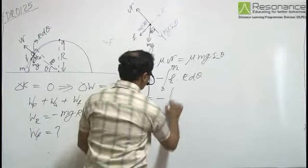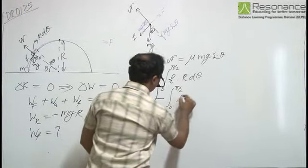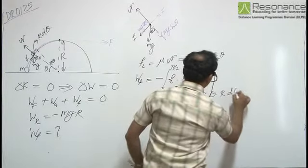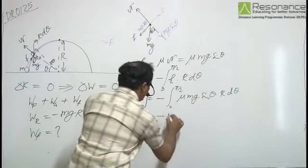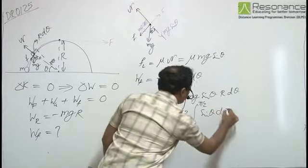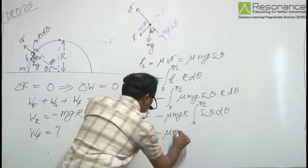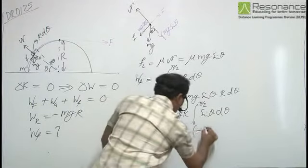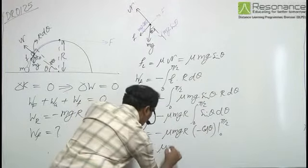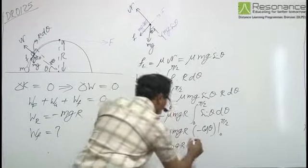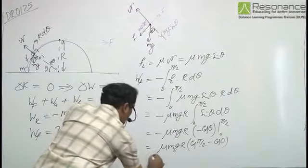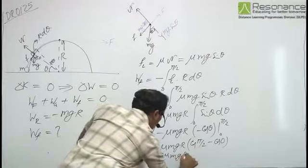That is equal to minus integral 0 to pi/2 of mu Mg R sin theta into R d theta. That is equal to minus mu MgR times minus cos theta from 0 to pi/2, or mu MgR times (cos pi/2 minus cos 0). That is equal to minus mu MgR.